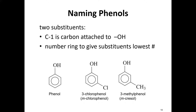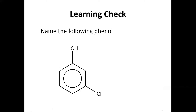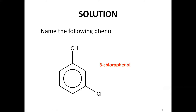When naming phenols, carbon one is always where the OH is attached. We number in the direction on either side to give substituents their lowest numbers. For example, one, two, three — this is 3-chlorophenol. And here is a 3-methylphenol. So with the OH at position one, going to position three gives us 3-chlorophenol.